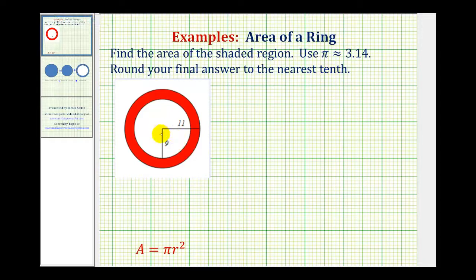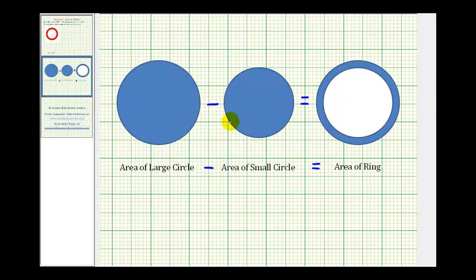So our general strategy here is going to be to find the area of the large circle, and then subtract the area of the small circle, leaving us with the area of the red ring. To look at this in more detail, let's take a look at this diagram here. Again, the idea is if we find the area of this large circle, find the area of this small circle, and then subtract the areas, it's going to leave us with the area of this blue ring, or this blue shaded region.